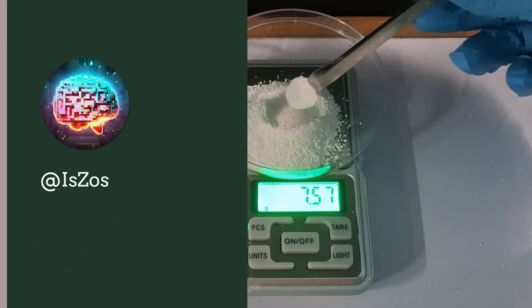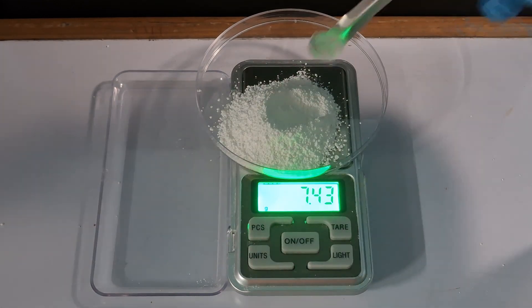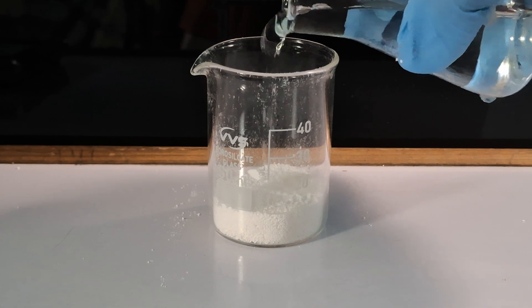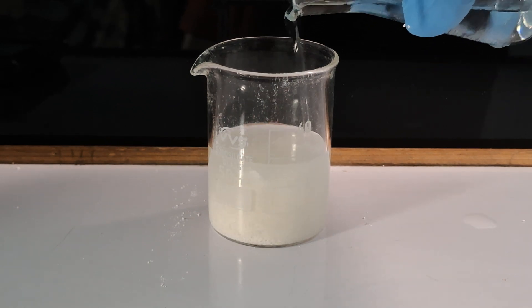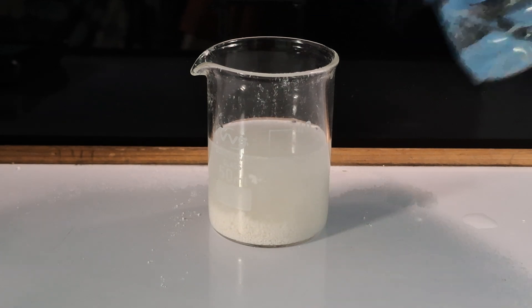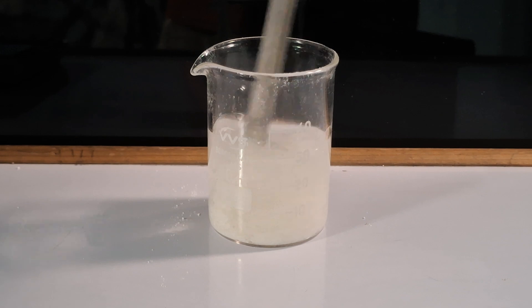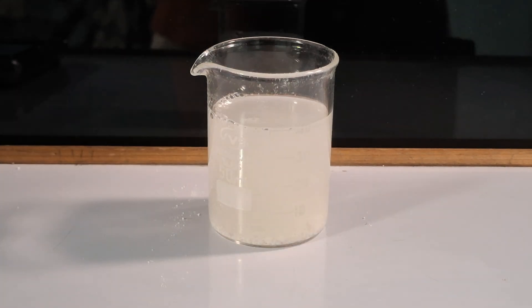Starting off, I weigh about 7.5 grams of sodium benzoate. Next I dissolve it in an adequate amount of water. I continue adding water and stirring the solution until all the sodium benzoate has completely dissolved.